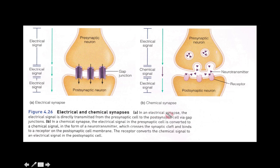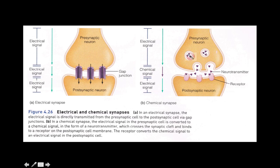In an electrical synapse, the electrical signal is directly transmitted from the presynaptic cell to the postsynaptic cell via gap junctions. In a chemical synapse, the electrical signal in the presynaptic cell is converted to a chemical signal in the form of a neurotransmitter. The neurotransmitter is released from the presynaptic neuron, diffuses across the synaptic cleft, and binds to receptors on the postsynaptic neuron. The receptor then converts the chemical signal back to an electrical signal in the postsynaptic cell.